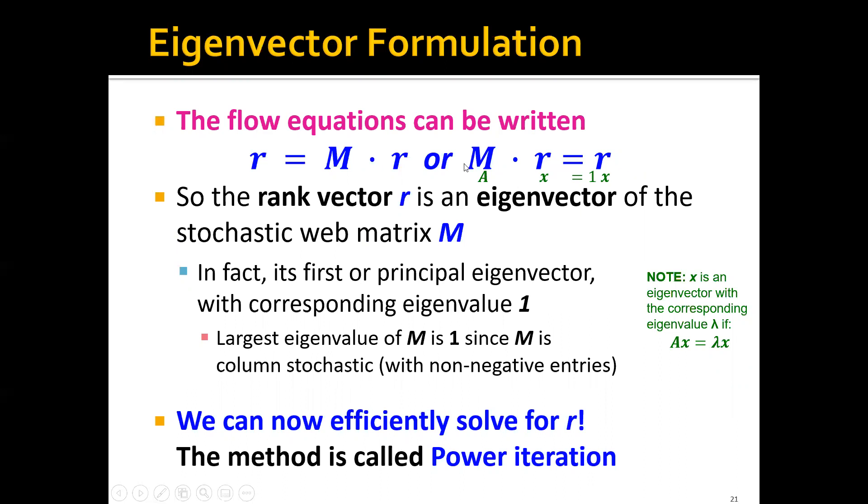The rank vector r is actually an eigenvector of the stochastic web matrix M. Remember that if a matrix A times a vector x equals lambda x, where lambda is a scalar, we can say that vector x is an eigenvector of matrix A corresponding to the eigenvalue lambda.